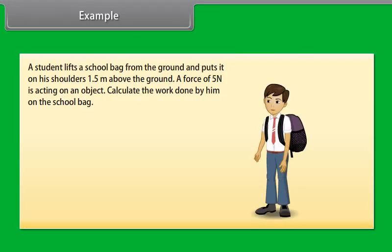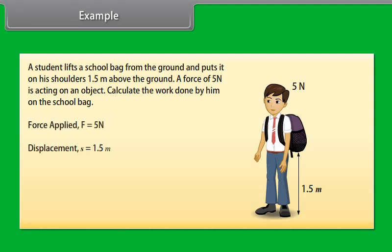Let us now find the work done when force applied and displacement is given. A student lifts a school bag from the ground and puts it on his shoulders 1.5 meters above the ground. A force of 5 N is acting on the object. Calculate the work done by him on the school bag. Here, force applied is 5 N and displacement S is 1.5 m. We know that work done = force × displacement. Therefore, work done = 7.5 N·m or 7.5 joules.